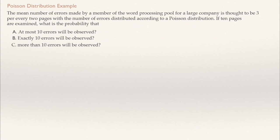First, this is a discrete probability distribution because we are counting errors. It could be zero errors, or one error, or two errors, or 20 errors, but never 20.5 or 20.32. Definitely, this is a discrete distribution.